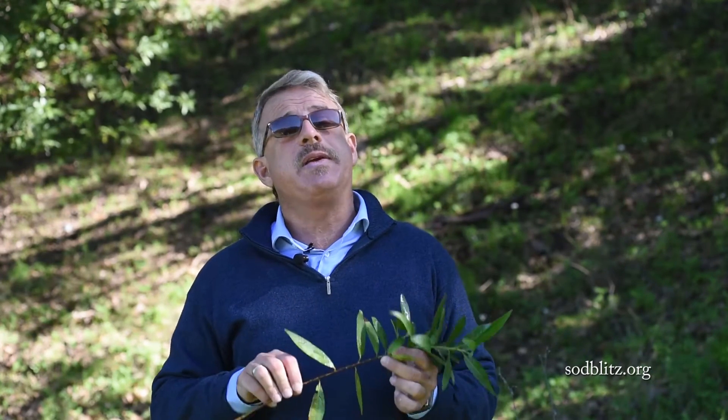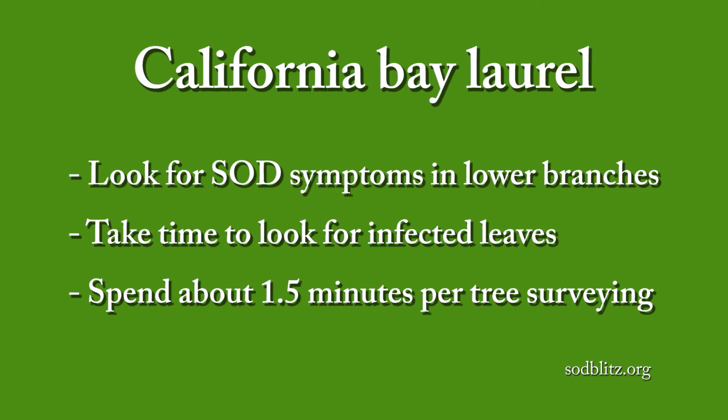Once you identify a California bay laurel, you will be looking for symptoms of Sudden Oak Death. These symptoms are not always easy to see because as little as a single leaf may be infected by the pathogen, and sometimes up to 50% of leaves can be infected. It's very important to carefully observe the tree to determine whether it has been infected. Luckily, most infections are usually on the lower branches, so just focus on the lowest branches. It has been determined that at least 20 seconds per side is necessary to identify typical symptoms — that is 20 seconds for each of the four sides of the tree.